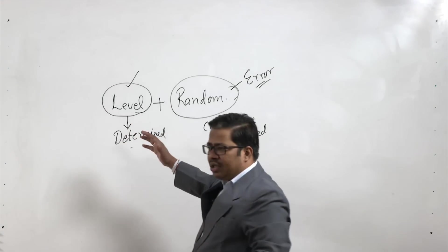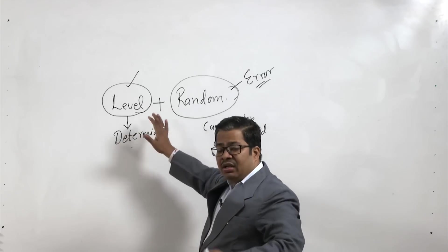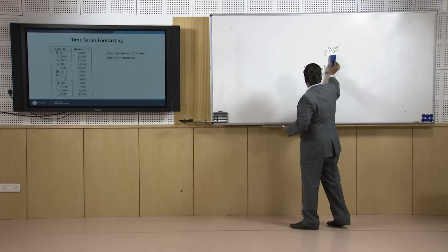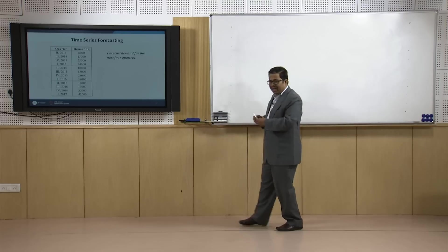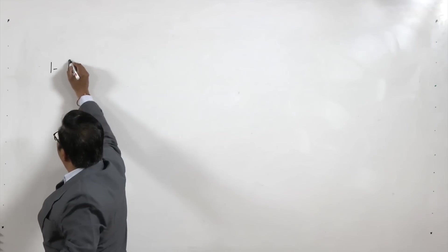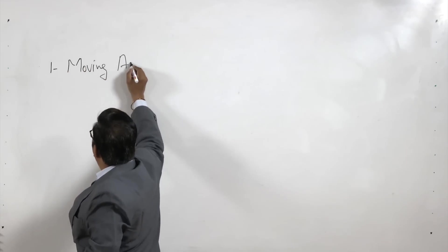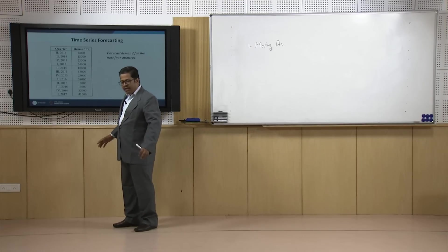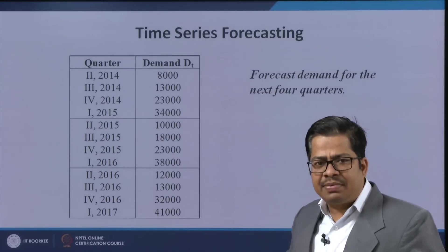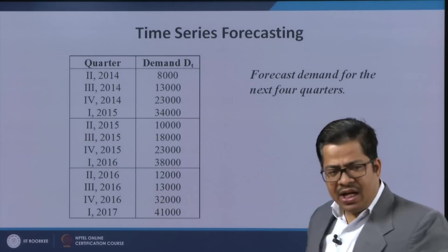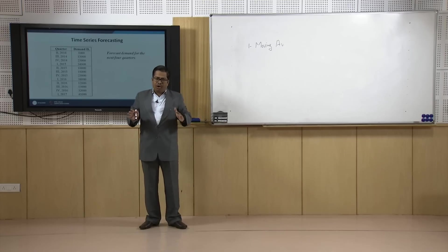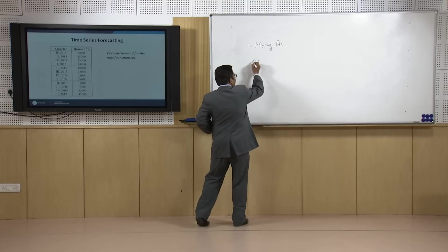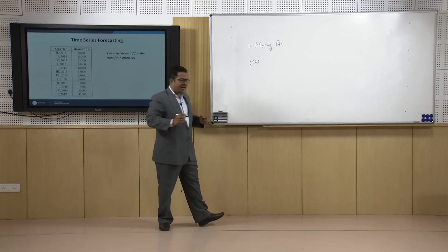Let us try to see how in the best possible manner we can determine the level components. Let me start with the simplest method of time series, which is known as the moving average method. This is the simplest method of time series. The data is here for past many periods, and with the help of this past data we will try to predict the future. The moving average method is the building block of time series forecasting, and within it there is a category known as simple moving average.